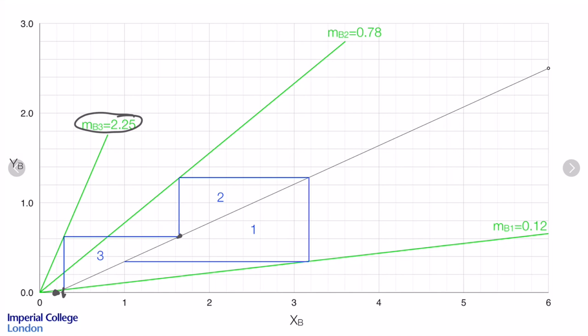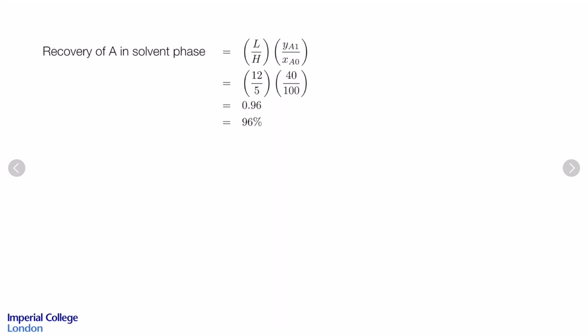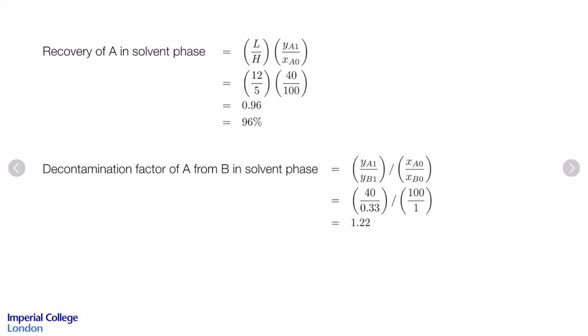That gives us the concentrations of B leaving stage 3, and likewise for the other stages. We can now put all of those concentrations onto our diagram — previously we had all concentrations of A leaving the equilibrium stages, and now we also have the concentrations of B leaving each stage. The final part of the question is to apply our known expressions: the recovery of A in the solvent phase is equal to 96%, and the decontamination factor of A from B in the solvent phase is equal to 1.223.